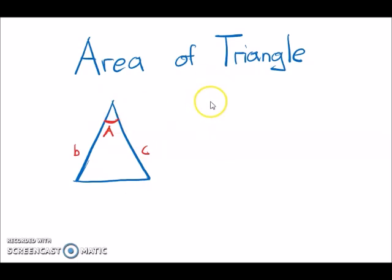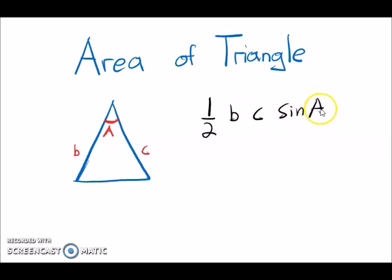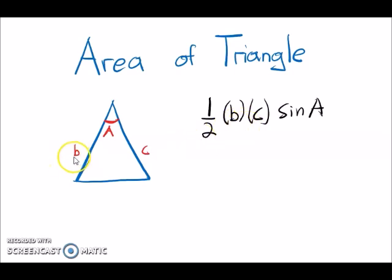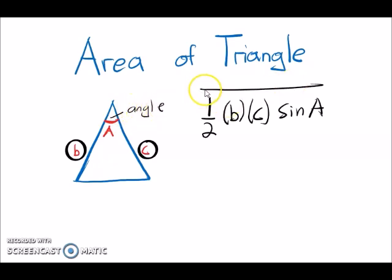For the area of a triangle, the formula is: Area = ½ × b × c × sin A. Here b and c are the lengths of the two sides just beside the angle A.